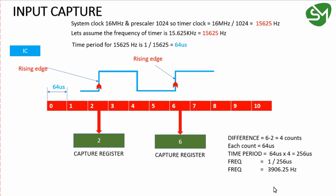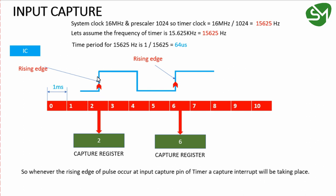Thus the frequency of a pulse is measured using the input capture module of the timer in AVR microcontroller. Also, whenever a rising edge pulse is given to the input capture pin, an input capture interrupt will interrupt the processor. This interrupt can be further used for many applications in your program. I hope you now understand the working principle of input capture using this example of measuring the frequency of pulses. Thanks for watching.